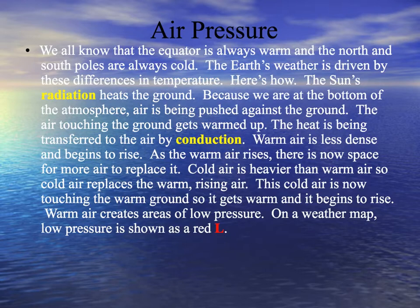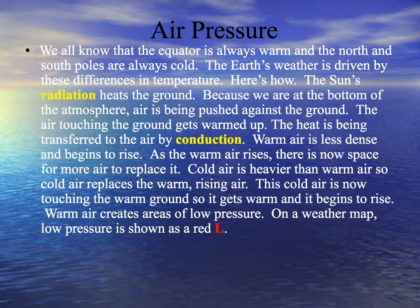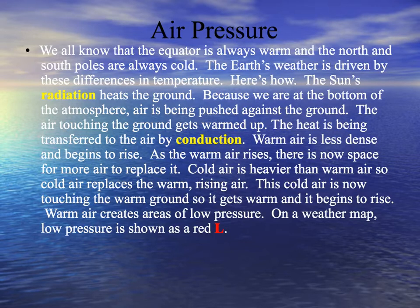Warm air is less dense, and it begins to rise. As this warm air rises, there's now space for more air to replace it. So the warm air goes up, and there's an area down near the ground where there's no air. Cold air, which is heavier than warm air, sinks down and replaces the warm rising air. So warm air creates areas of low pressure. On a weather map, low pressure is shown as a red L.